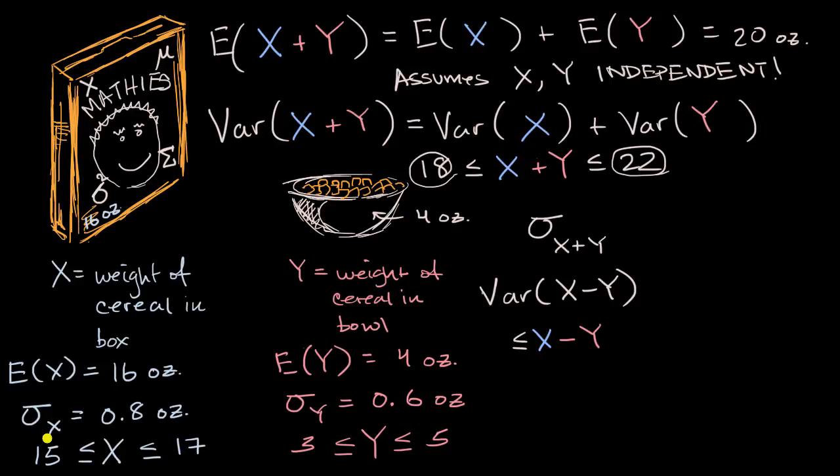Well, the lowest value is if you have a low X and you have a high Y. So it would be 15 minus five. So this would be 10 right over here. That would be the lowest value that you could take on. And what would be the highest value? Well, the highest value is if you have a high X and a low Y. So 17 minus three is 14.